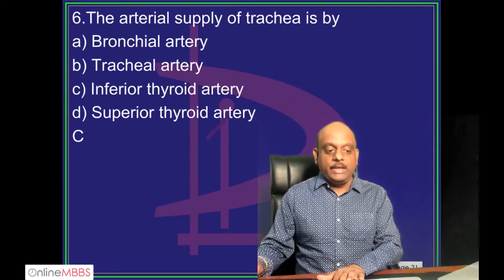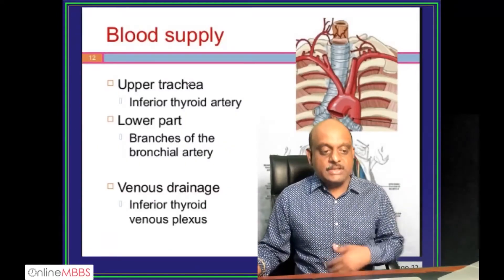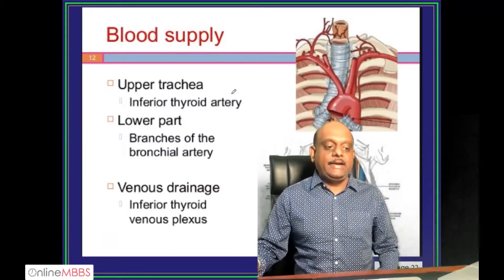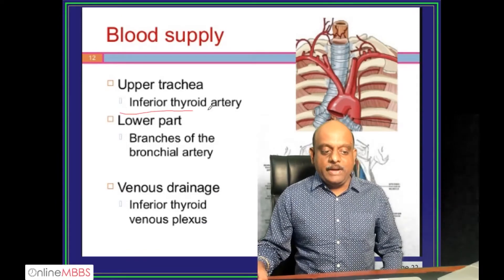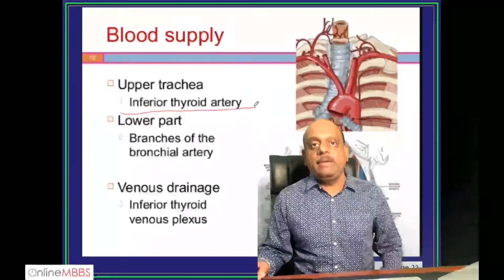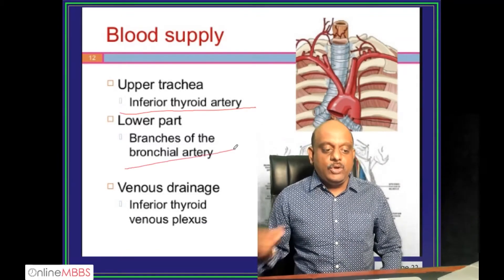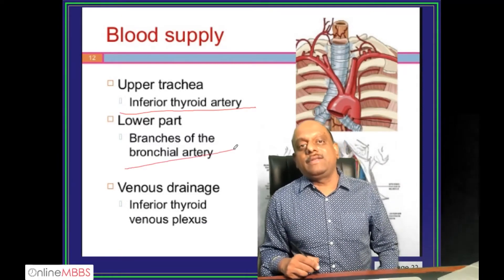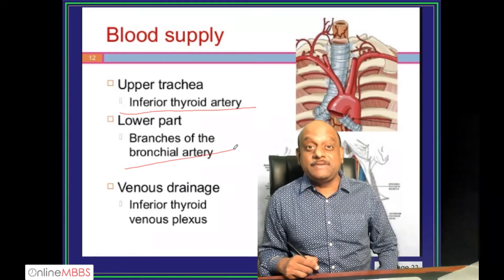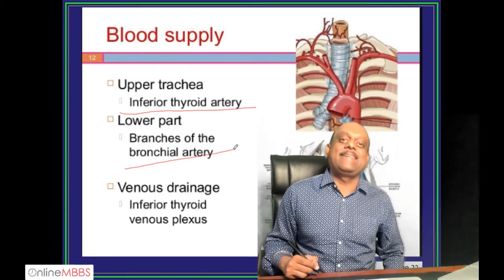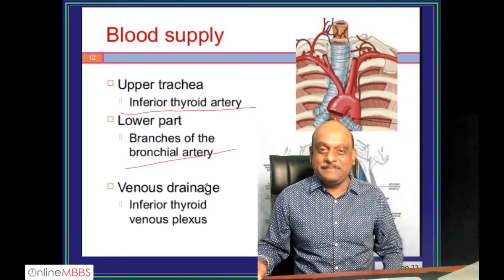Inferior thyroid artery - if you look at the trachea, the upper trachea is supplied by the inferior thyroid artery, and the lower part of the trachea is supplied by the branches of the bronchial artery. That is what you need to remember.